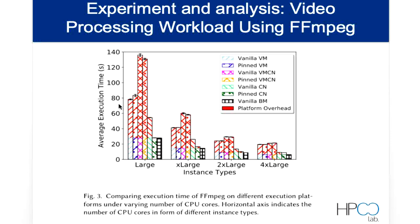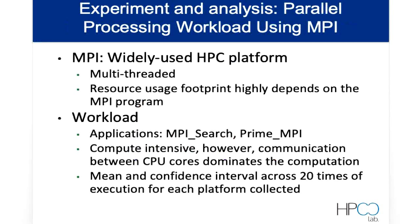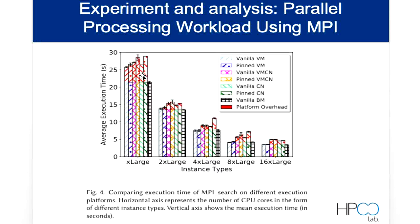The next experiment is about parallel processing workload using MPI. MPI is multi-threaded and its resource usage footprint highly depends on the MPI program. We use MPI Search and Prime MPI, which are compute-intensive in terms of communication between CPU cores. We collected mean and confidence interval across 20 executions. As Figure 4 shows, wherever containers are used, much more overhead is observed even compared to virtual machines. We have studied this behavior in depth in our paper and will discuss it in the next slide.